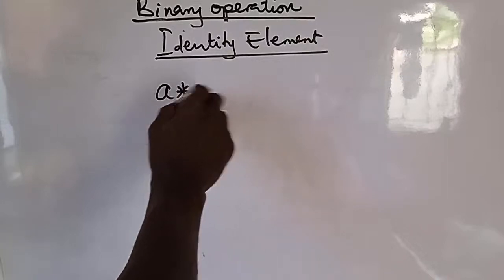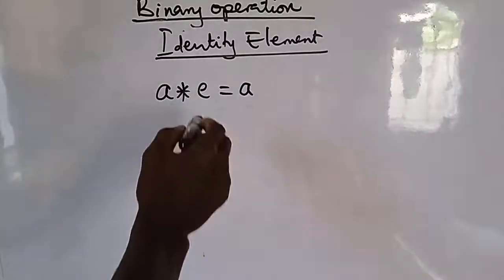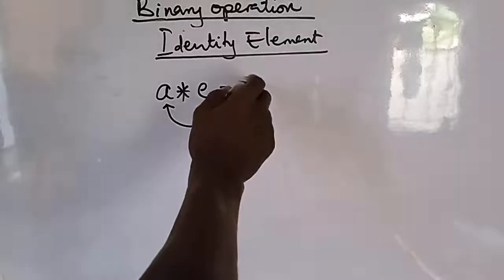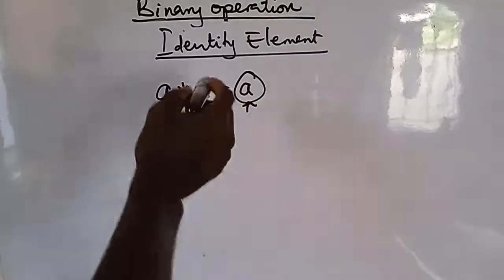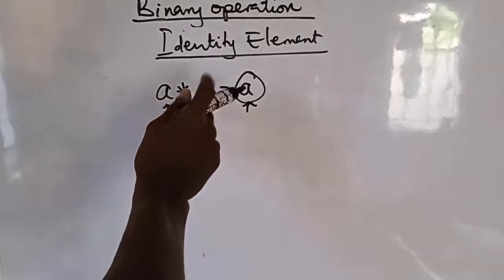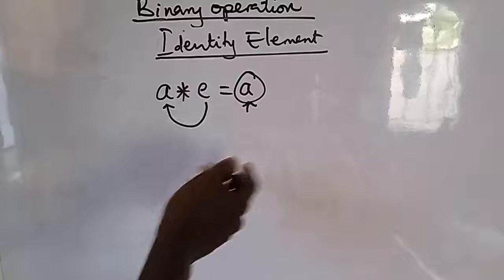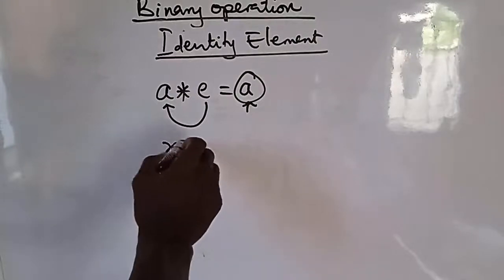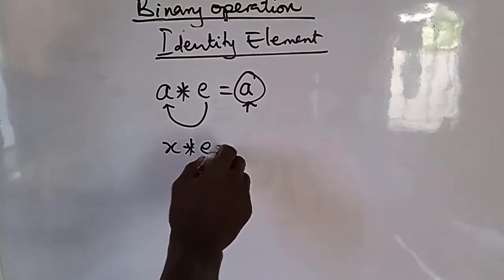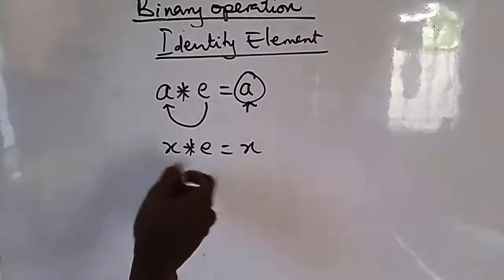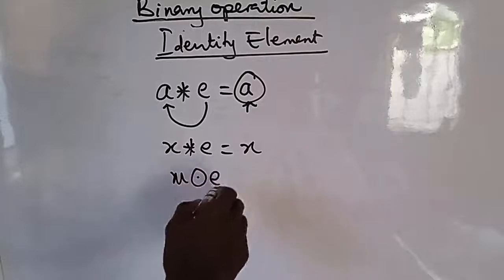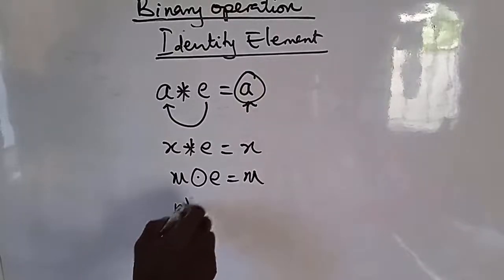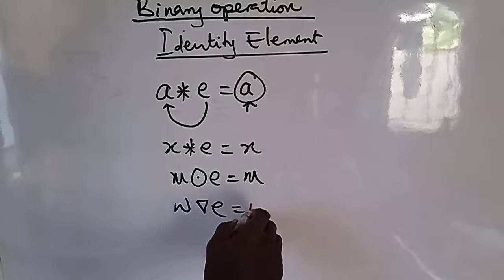By definition, the identity element is such that: a operation identity element gives you a. This means when an identity element e is operated with any element, it gives you the same element as the answer. For instance, x operation e gives you x; m operation e gives you m; w operation e gives you w.